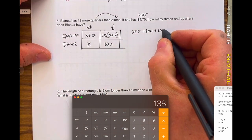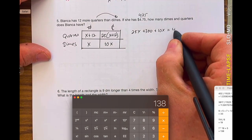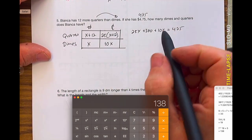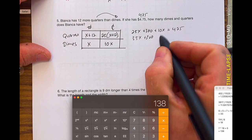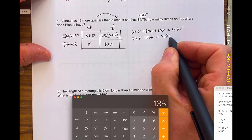The dimes is just 10X, is equal to 475. Then I'm adding the 25X to the 10X. That gives me 35X plus 300 is equal to 475.